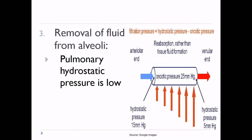Third function of pulmonary circulation: removal of fluid from alveoli. Pulmonary hydrostatic pressure is low; therefore, fluid entering the alveoli is absorbed by capillaries, keeping the alveolar surface free from fluid. This protects gas exchange function of the lungs and opposes transudation of fluid from capillaries to the alveoli — so there is removal of fluid rather than transudation.